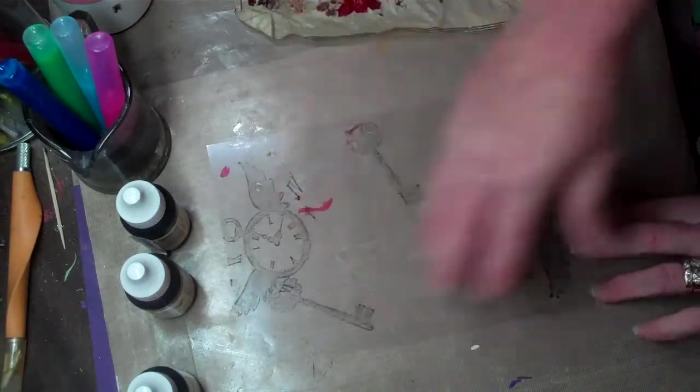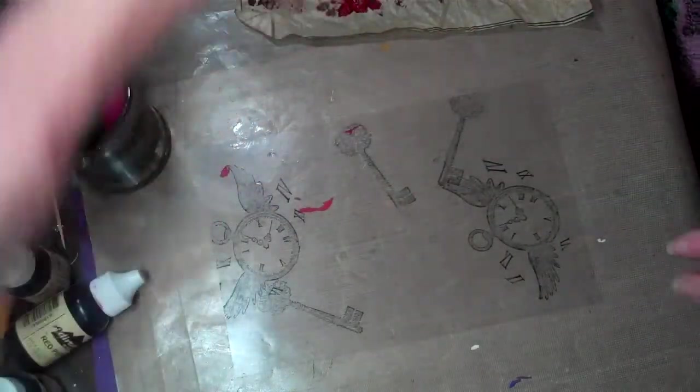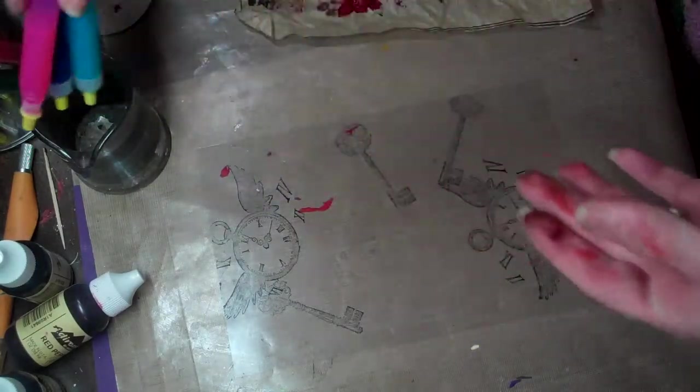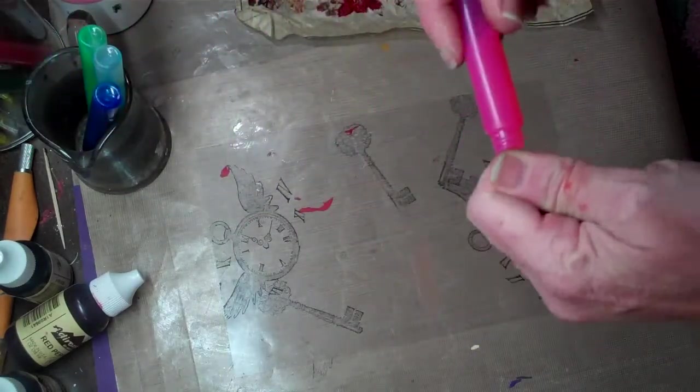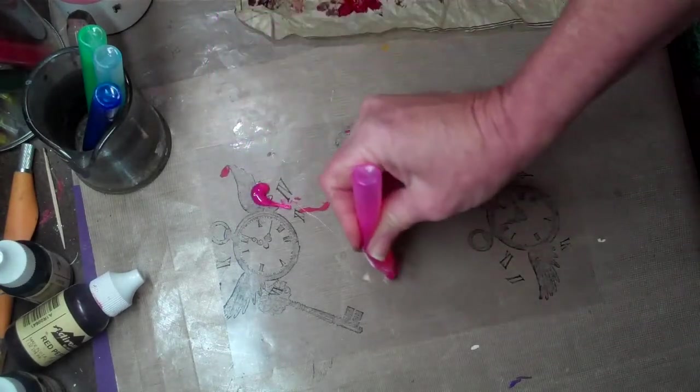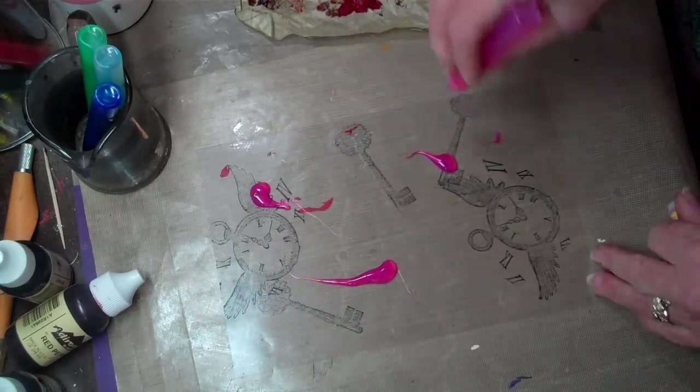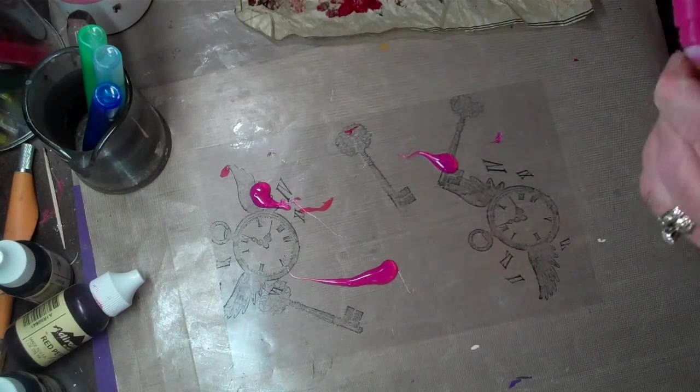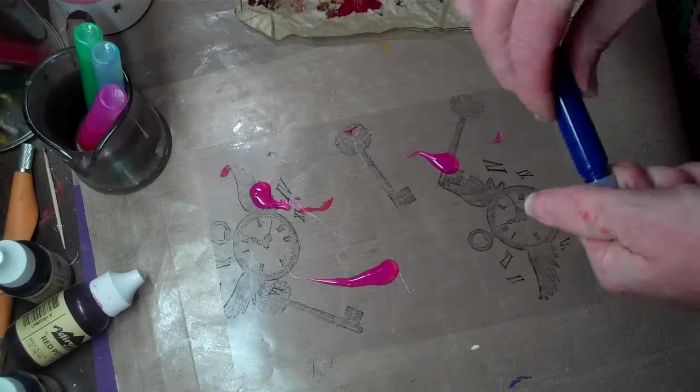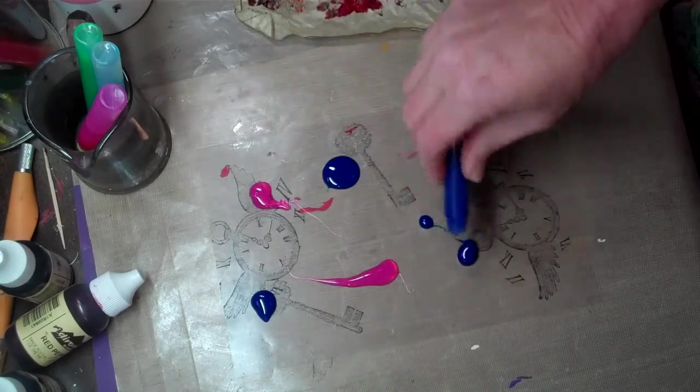Now again, we're working on the back side of it. Instead of using re-inkers this time, I'm using my colored crystal lacquers. Now I am using the ones that are what I would call the clear ones, not the pearls. I'm just going to literally, I open up the whole lid and I just dump it on there. I've got three or four colors. A real good hint is keeping your crystal lacquers upside down so that it flows a little easier.